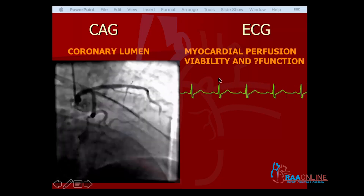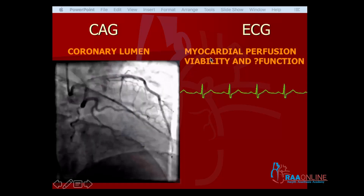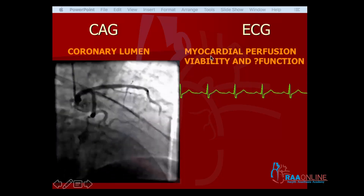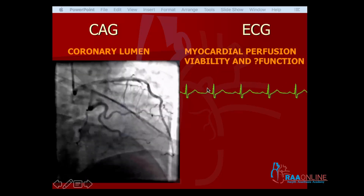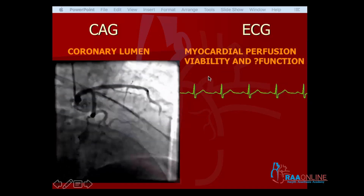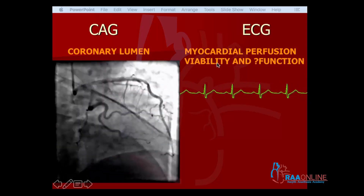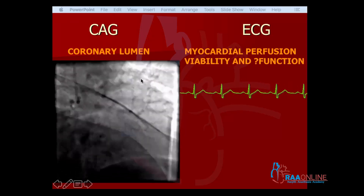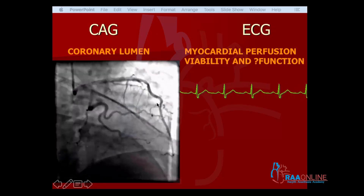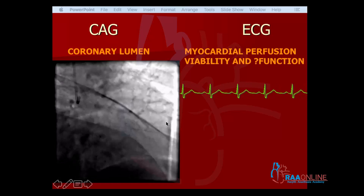That's why ECG gives you much more information than a coronary angiogram. ECG also gives a very important piece of information about the viability of the myocardium — not only whether the myocardium is receiving blood, but whether that myocardium is healthy or scarred. Whenever you have a coronary angiogram showing a block in the coronary arteries, you would like to know whether the blocked coronary artery is supplying a healthy myocardium or a dead myocardium or a scar.